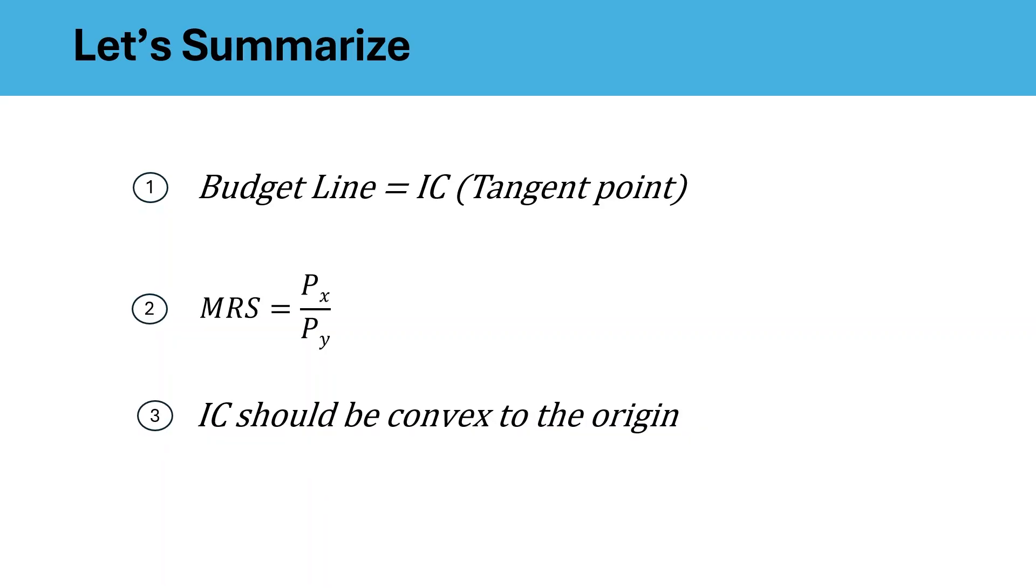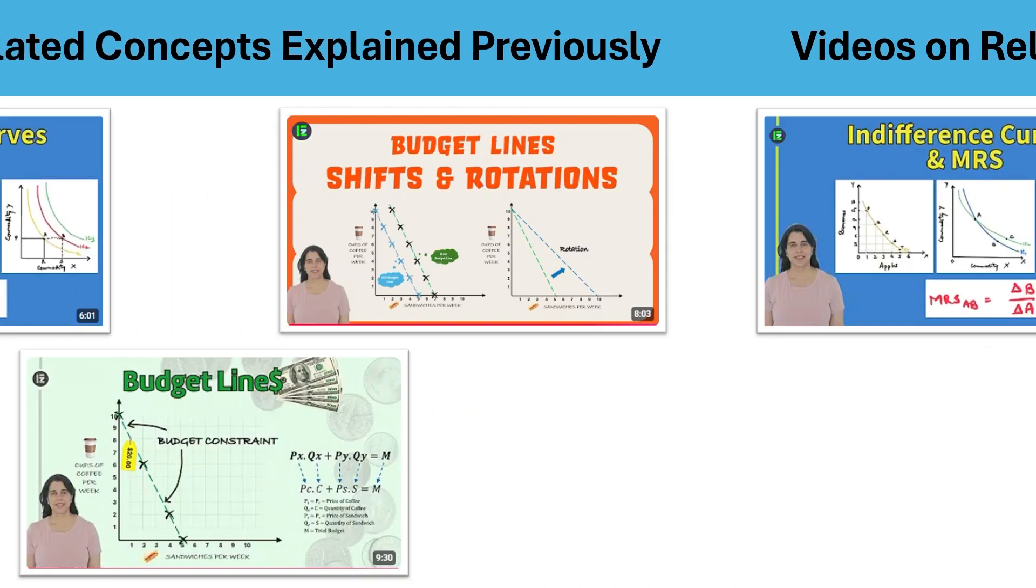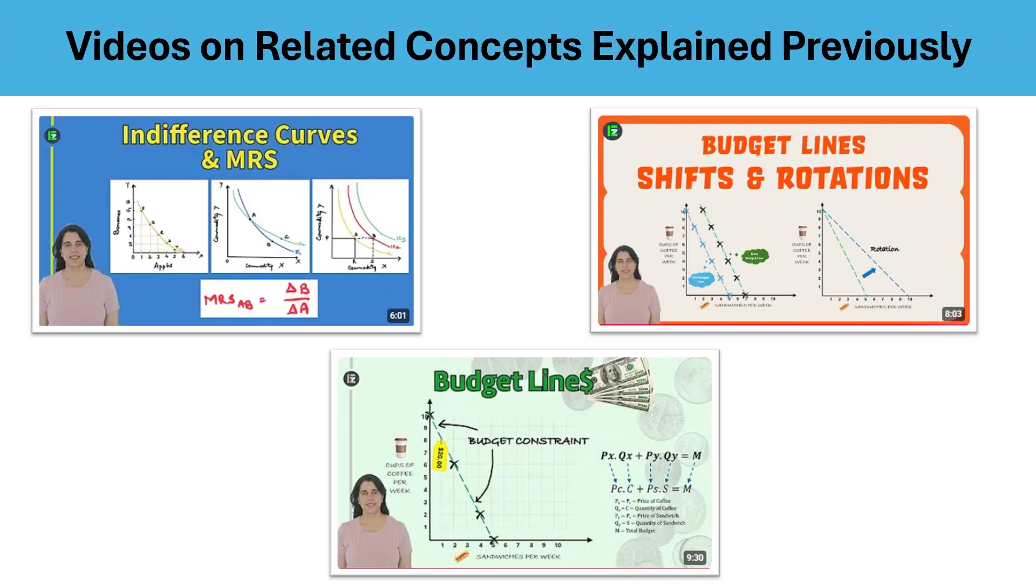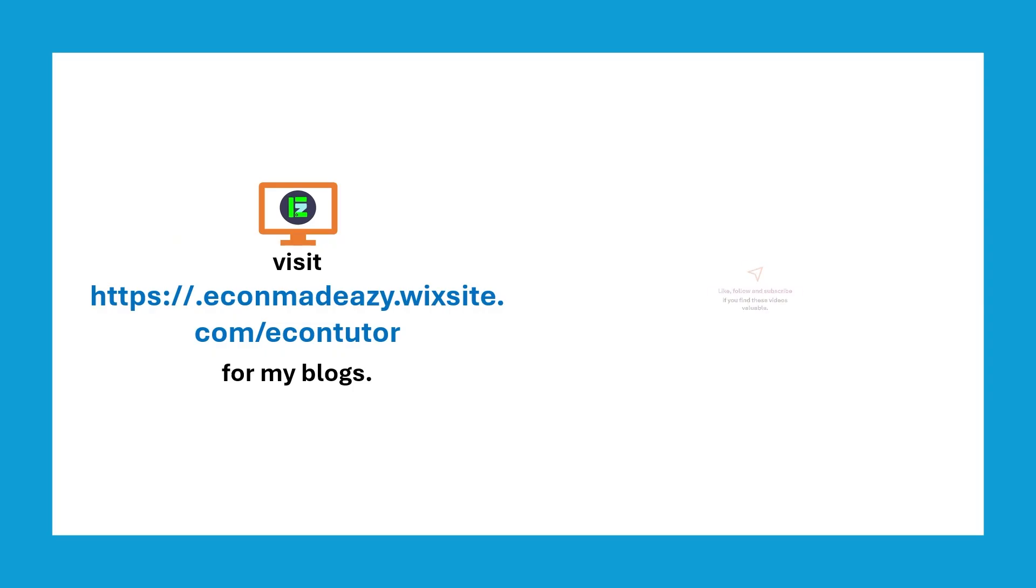This is how a consumer chooses the best possible combination of goods. If you haven't yet watched the earlier videos in this series, check them out now. And if you need help preparing for your economics exam, visit econmaydc.wixsite.com slash econ tutor. Don't forget to like, share and subscribe. See you soon in the next video.